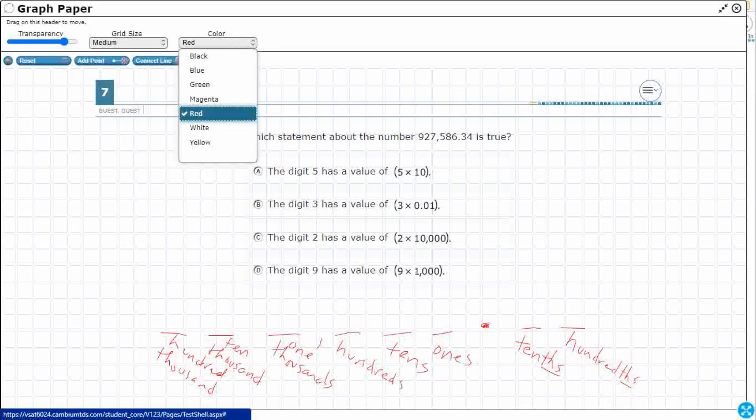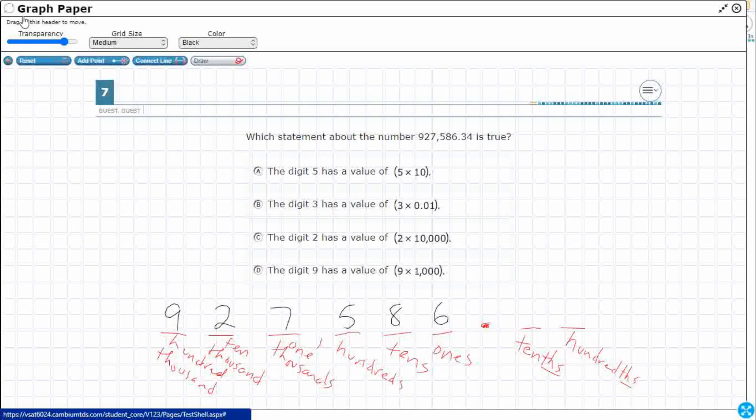So let's put our number here, and let's see what we've got. Nine hundred twenty-seven thousand five hundred eighty-six and thirty-four hundredths. Alright.